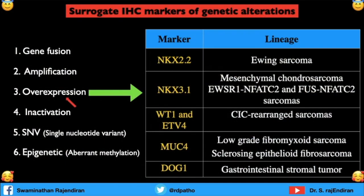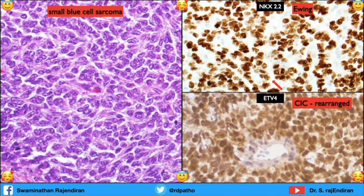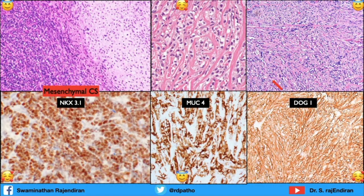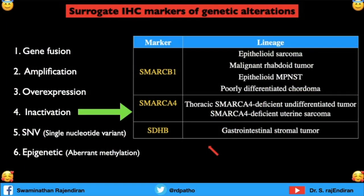There are five overexpression markers. This small blue cell tumor is nicely NKX2.2-positive — Ewing sarcoma. When ETV4 is positive, it is a CIC-rearranged tumor. NKX3.1 nuclear positivity is seen in mesenchymal chondrosarcoma — remember it also cross-reacts with prostatic carcinoma antigen, but NKX3.1 is positive in mesenchymal chondrosarcoma. MUC4 is for sclerosing epithelioid fibrosarcoma, and DOG1 is positive in GIST.